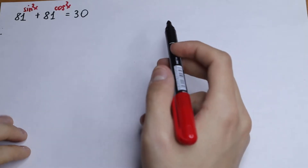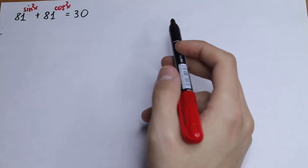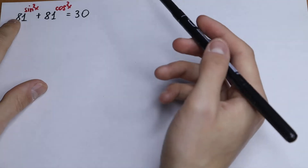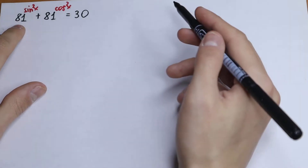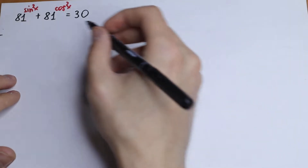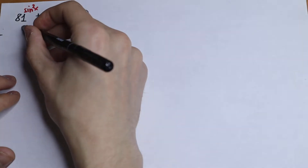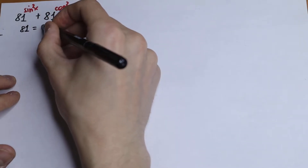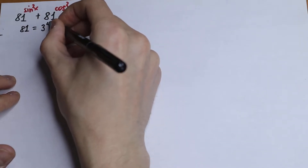So how can we solve this? First of all, we can simplify this a little bit. We can write 81 as 3 to the fourth power. We know that 81 is equal to 3 to the fourth power.